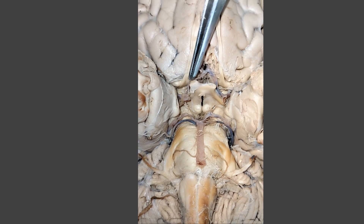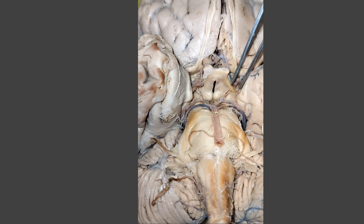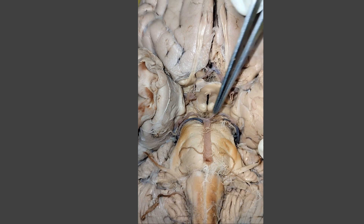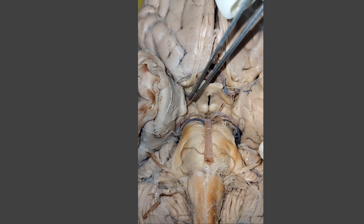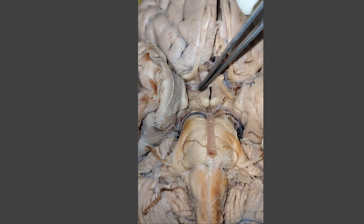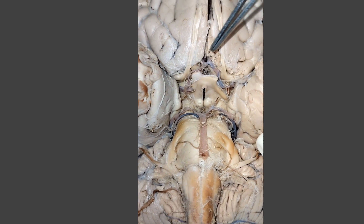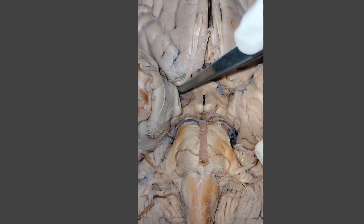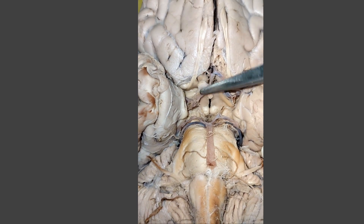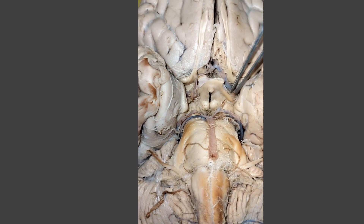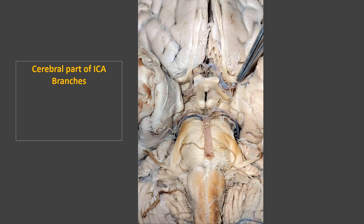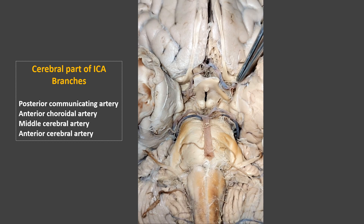Here is the cerebral part of the internal carotid artery. Branches given by each internal carotid artery at the base of brain are: the posterior communicating artery, which communicates with the posterior cerebral artery; the anterior choroidal artery; and it ends by dividing into its two terminal branches — the middle cerebral artery and the anterior cerebral artery. Both anterior cerebral arteries communicate at the midline through the anterior communicating artery.